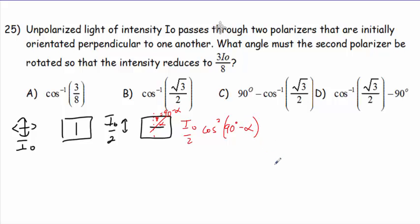And we want to solve for that alpha. So we're going to set this equal to 3 I-naught over 8. I-naughts, of course, are going to cancel. Multiply both sides by 2, and we'll get the cos squared of 90 minus alpha would be equal to 3 quarters.